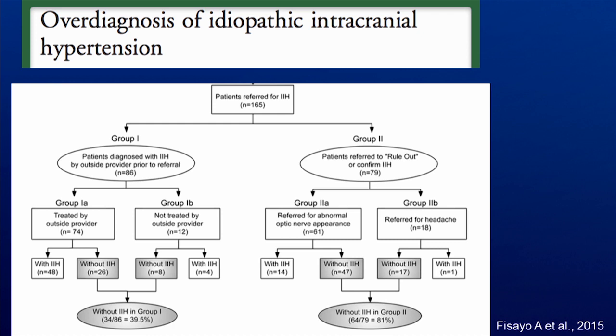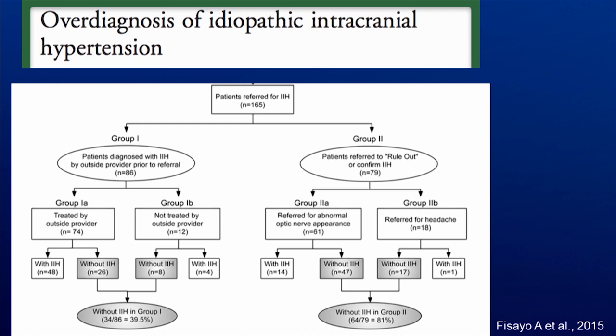Interestingly, a recent paper out of Emory showed that idiopathic intracranial hypertension is often overdiagnosed. In fact, they found that almost 40% of patients referred with the diagnosis of IIH actually did not have the condition. Many of these diagnoses were incorrectly made because of single lumbar punctures which showed elevated opening pressures. Therefore, we clearly need better methods of detecting raised intracranial pressure.